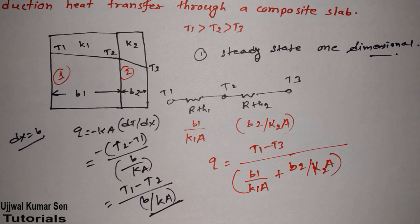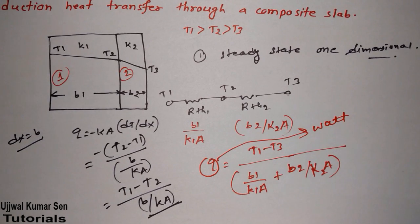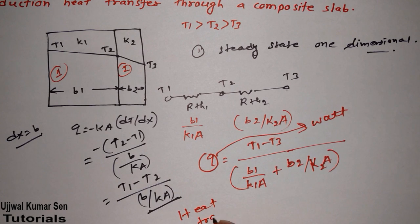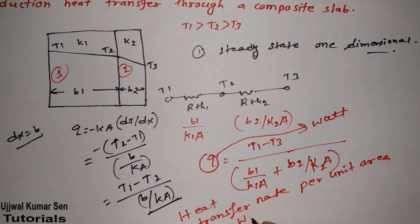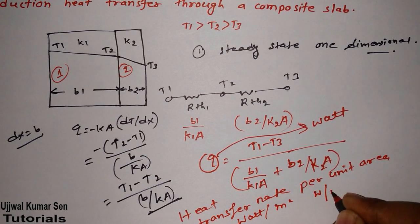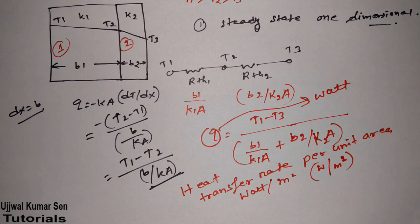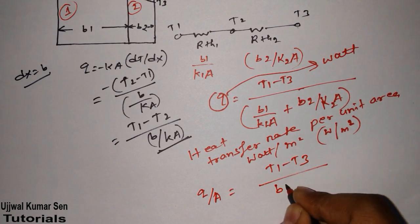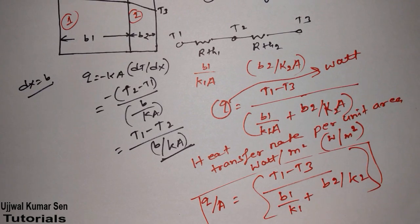The unit of heat transfer rate is watts. If the question asks for heat transfer rate per unit area — that means W/m² — then we transfer the area to the other side: Q/A equals (T1 minus T3) divided by (B1/K1 plus B2/K2). This is the formula for heat transfer rate per unit area for a composite slab.